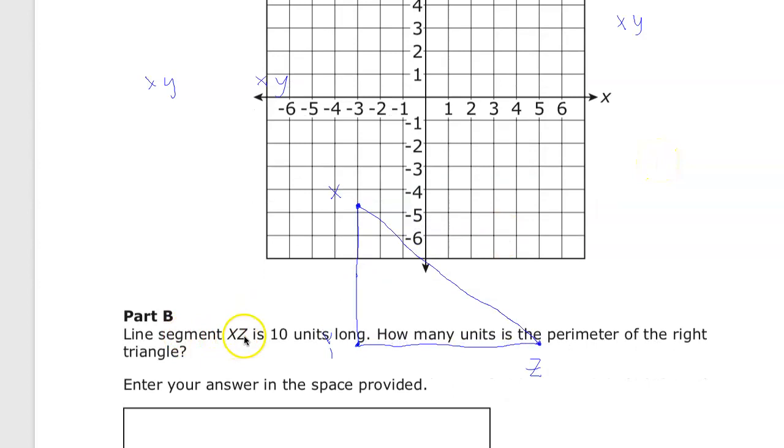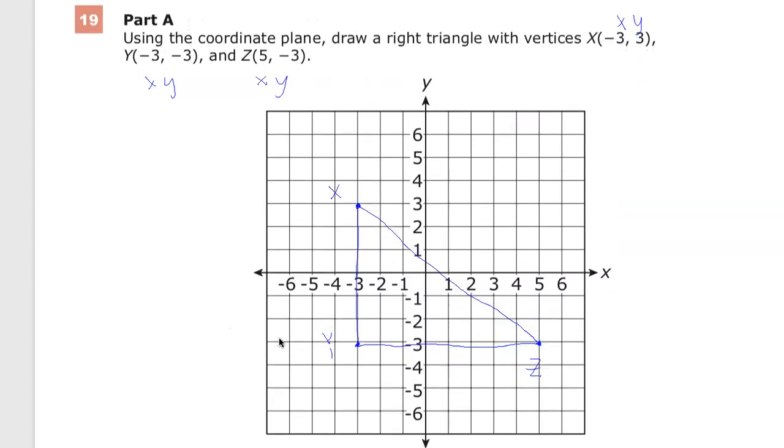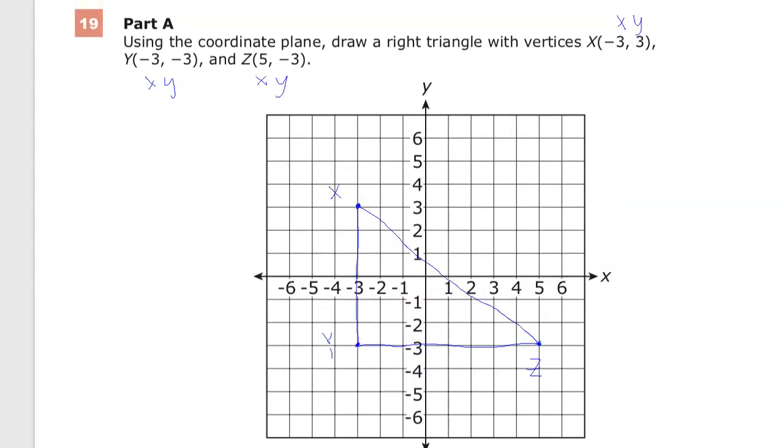Line segment XZ is 10 units long. How many units is the perimeter of the right triangle? So I'm going to roll this back up. And they told me that we want to know about the perimeter. The nice thing here is they actually told me how long XZ is, and they said that it's 10.